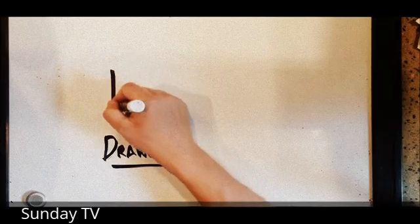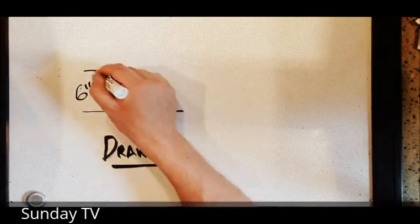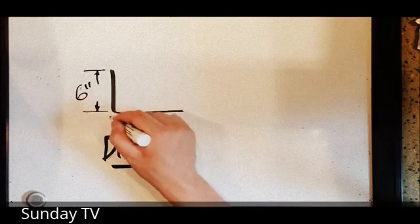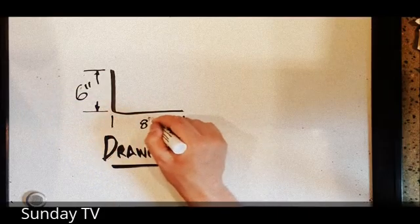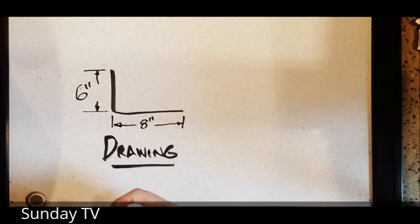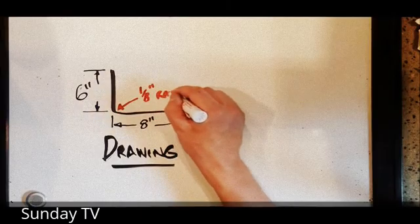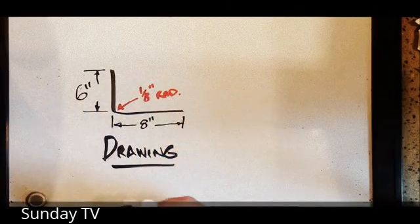When you get a drawing of a piece of material that they want you to bend up, they'll give you specifications. In this case, six inches on one leg, eight inches on the other leg, and those dimensions are from the end of the piece of metal to the flat on the opposing side.